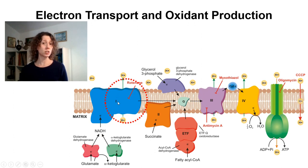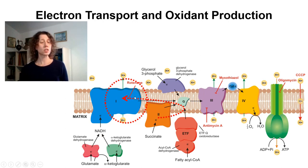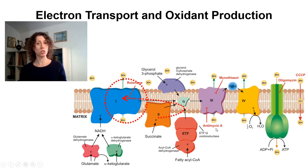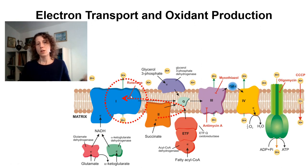Another source of electron leakage within complex 1 is reverse electron transfer. This happens when electrons in coenzyme Q — which usually came from complex 2 but could come from other sources of coenzyme Q reduction — are transferred back to complex 1. Typically this cannot happen under most physiological conditions, but it can happen if you have inhibition of the respiratory chain upstream of coenzyme Q, or if you have very high membrane potentials, which makes electron transfer less favorable thermodynamically. Under these conditions, coenzyme Q can re-reduce complex 1, and these electrons tend to reduce oxygen and generate superoxide radicals.